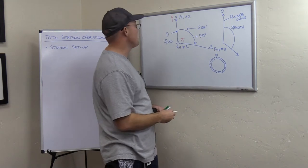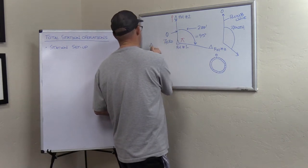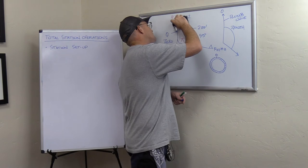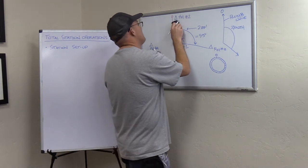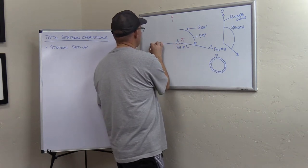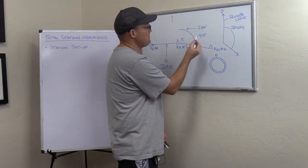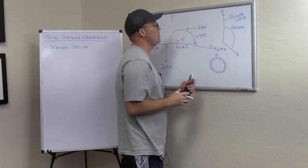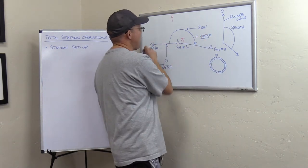Let's say we've got another point, RH number three. When we turn our total station and swing it to the right to sight RH number three and hit the measure button, we're going to measure this angle from RH1 to RH2 to RH3. This looks like it's about 93 degrees, and that 93 degree value is based on setting the line from RH1 to RH2 as zero. Now let's say we had another control point, RH number four, perfectly due west of RH number one. If instead we couldn't see RH2 — or it got destroyed by the contractor, which happens a lot — and we sight RH number four and set zero there as our backsight, this angle to RH3 is going to change — it's no longer 93; now it's about 183 degrees.